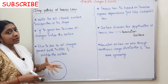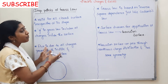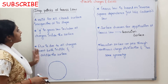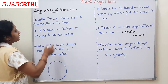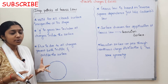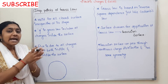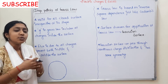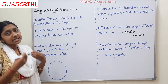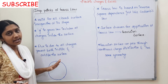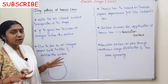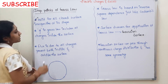Now we will see the important points for Gauss's Law. The first important point is that Gauss's Law is valid for all closed surfaces. So Gauss's Law is valid for any type of closed surface — that is the first point.